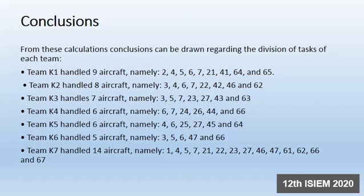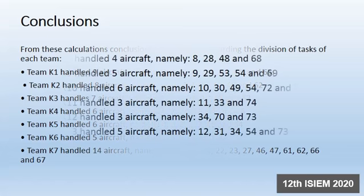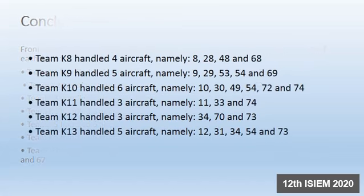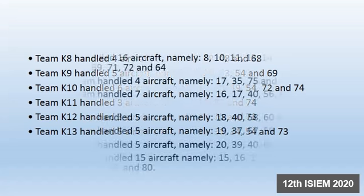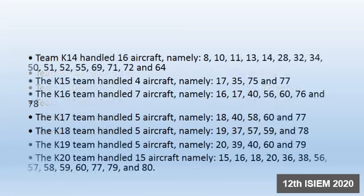In conclusion, from this calculation we can derive the division of tasks for each team. Team 1 through Team 7, Team 8 through Team 13, and Team 14 through Team 20 each have their respective task allocations shown.